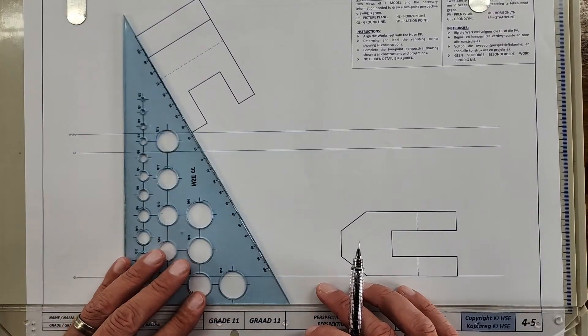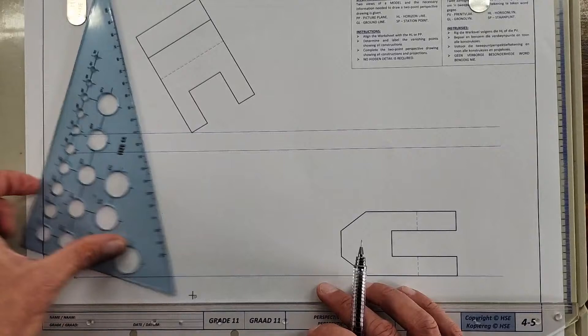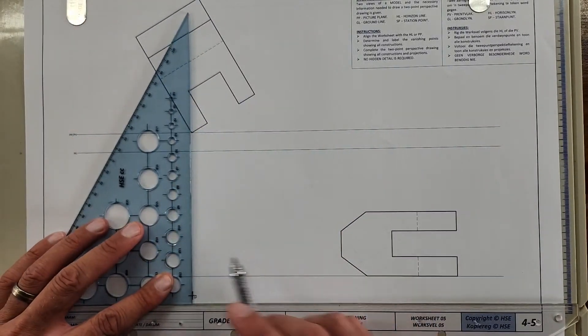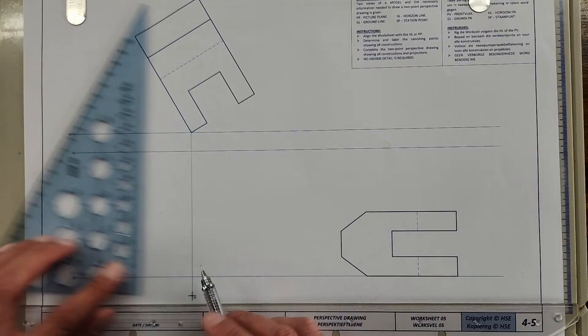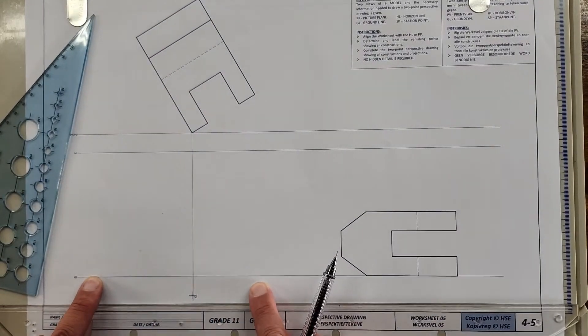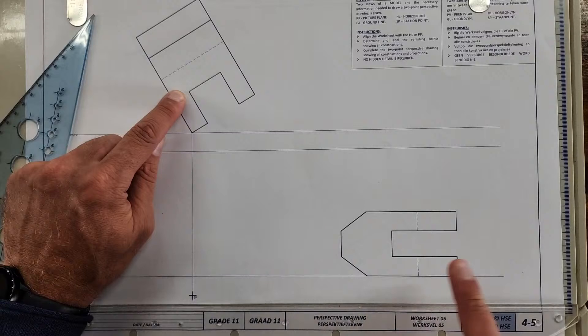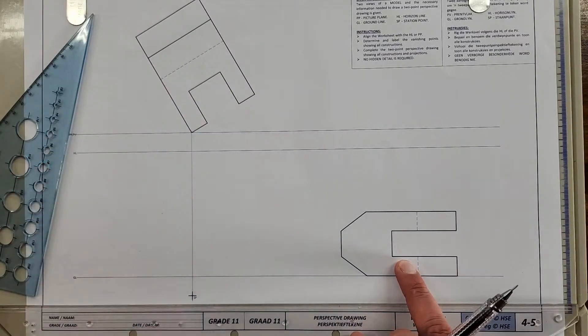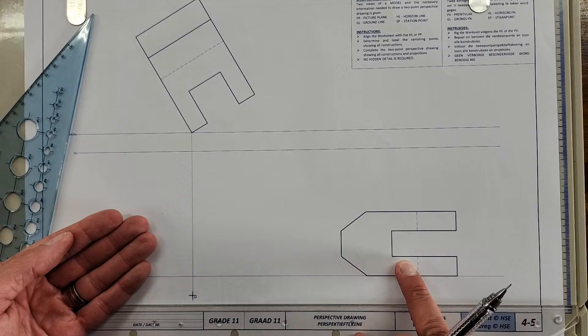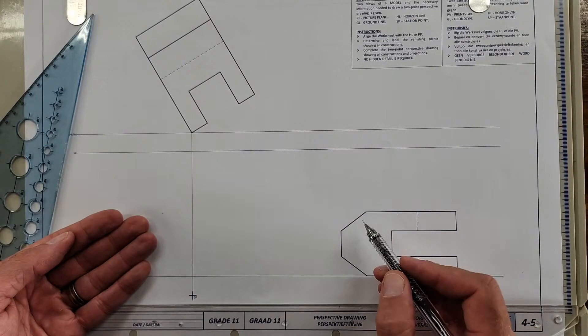What we do now is whatever is touching the picture plane is going to touch also the ground line. They give you a bow ansig and they give you in this case a side ansig as you look at it.